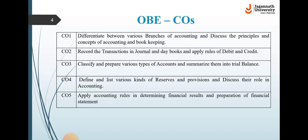CO3 is to classify and prepare various types of accounts and summarize them into a trial balance. CO4 is to define and list various kinds of reserves and provisions and discuss their role in accounting. CO5 is to apply accounting rules in determining financial results and preparation of financial statements.